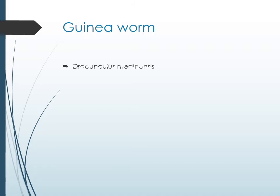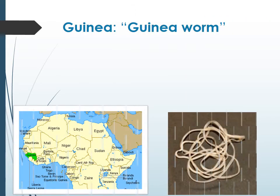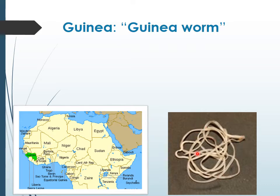Guinea worm is the common name of this worm, and the scientific name is Dracunculus medinensis. The scientific name is derived from two words: 'Dracon' meaning dragon, and 'medinensis' derived from the place Medina. The common name Guinea worm is derived from the African country Guinea. The Gujarati local name of this worm or the disease was 'Varo,' based on its characteristic shape, which is very thin and very long.